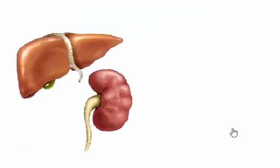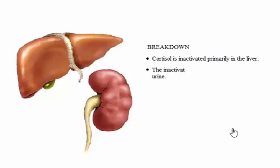Cortisol is a steroid hormone. Humans cannot break down the steroid nucleus. Its inactivation depends on altering the molecule and excreting it in the urine.